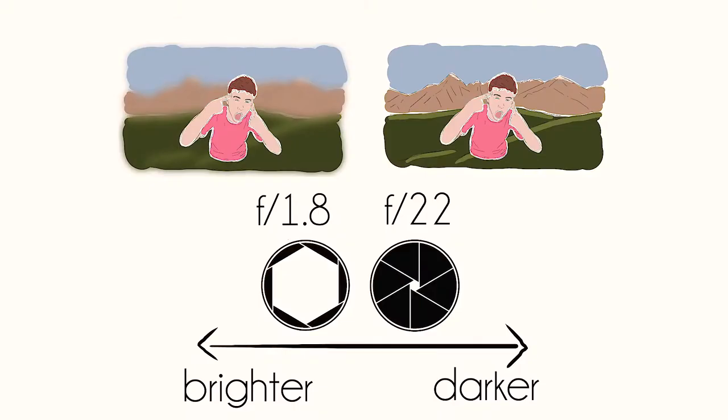The aperture also controls the depth of field. That's how people get a blurry background, or when people take landscape pictures and they have everything in focus — the aperture is what affects that. For a blurry background you want to use a wider aperture, which could also be known as a faster aperture.